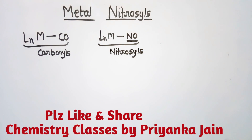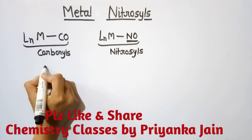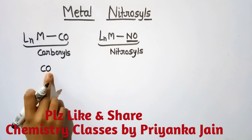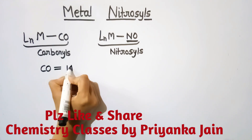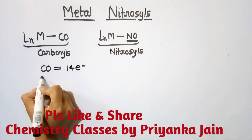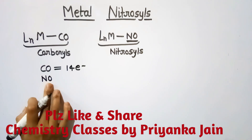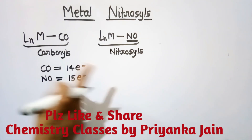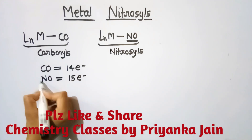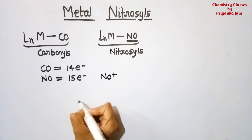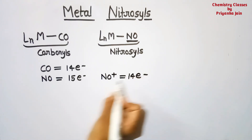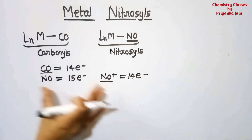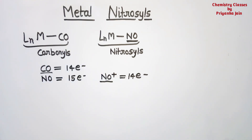What is the difference between carbonyls and nitrosyls? In carbon monoxide, carbon has 6 electrons and oxygen has 8, so there are 14 total electrons. In NO, nitrogen has 7 electrons and oxygen has 8, giving 15 total electrons. There is a difference of 1 electron. If we remove one electron from NO, it becomes NO⁺ with 14 electrons. So CO and NO⁺ are isoelectronic.